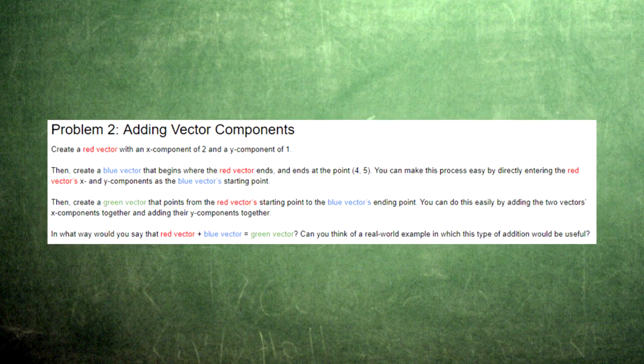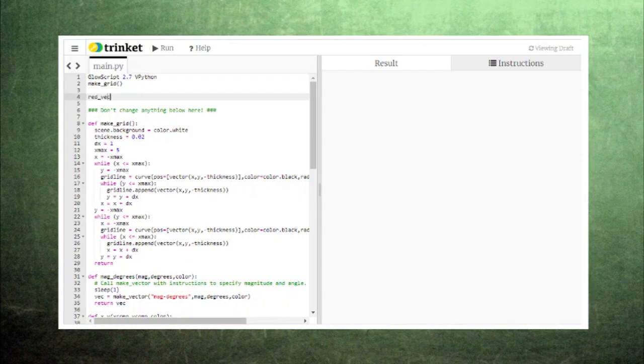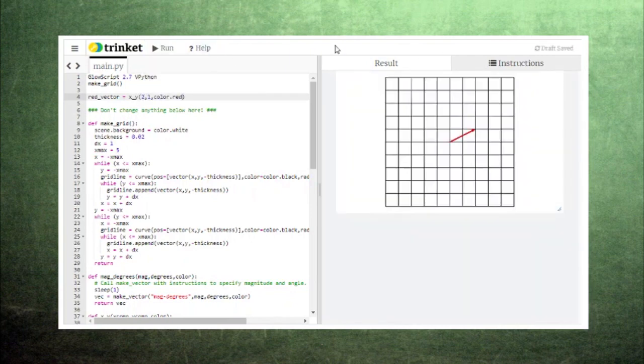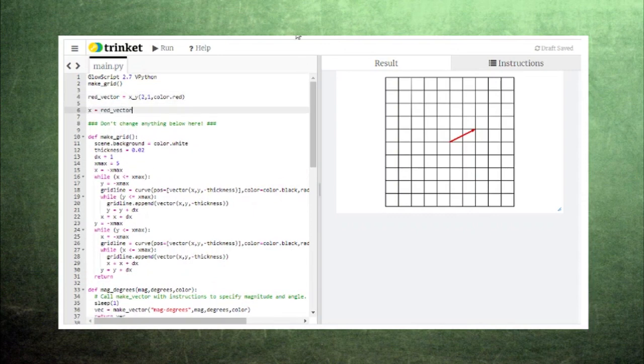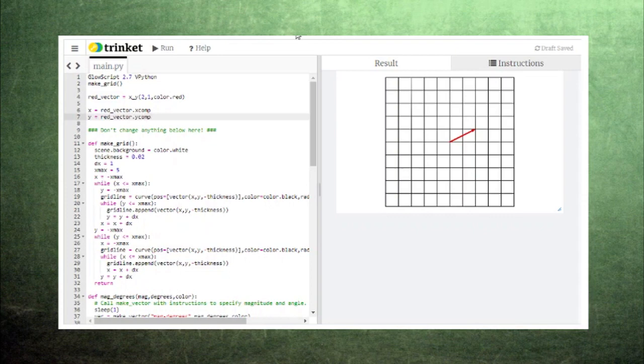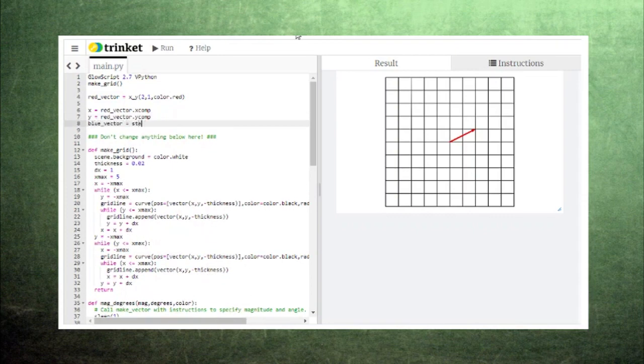To help you become comfortable using these vector attributes, one of the simple problems in the description below asks you to create a red vector with an x component of 2 and a y component of 1. Then, it asks you to create a blue vector that begins where the red vector ends and ends at the point. Using the red vector's attributes makes this process very easy, since you can directly enter the red vector's x and y components as the blue vector's starting point.